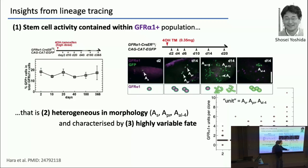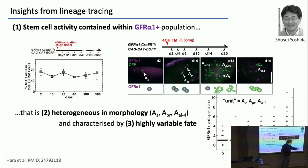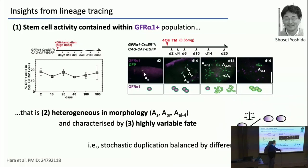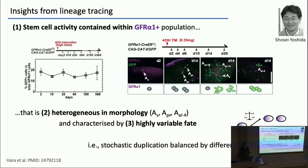Looking at the distribution of clones at different times, we see a very broad distribution. At day 20, some clones are comprised of 11 units, while many clones have no units at all. As we lose units, others are growing. Putting it all together, what that means is we've got very variable fate — what looks like stochastic duplication balanced by loss at the level of units, with differentiation being perfectly balanced.